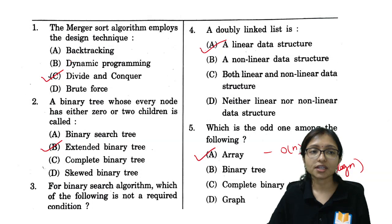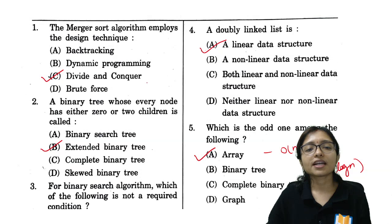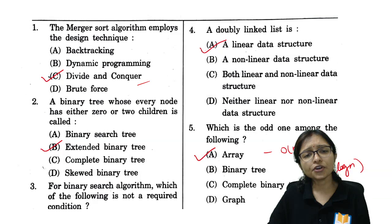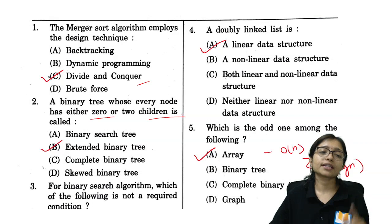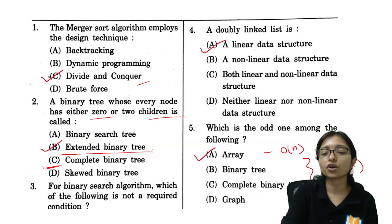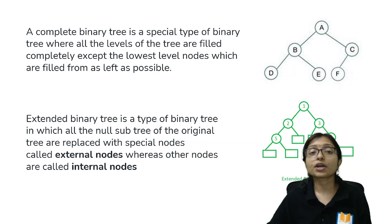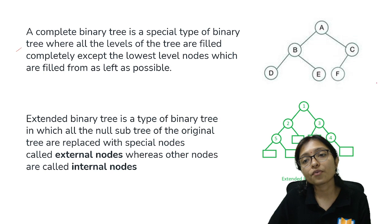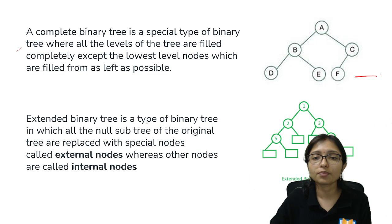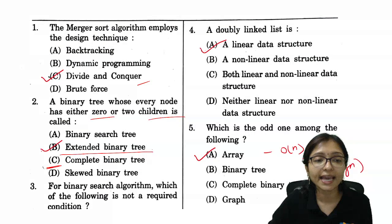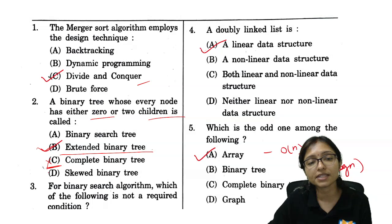Question 1: the merge sort algorithm uses the divide and conquer method — we all know that. Next: a binary tree where every node has either zero or two children is called an extended binary tree. Many students made the mistake of choosing complete binary tree. Complete binary tree means the last level may not be full, but extended binary tree means every node has zero or two children. So the answer is extended binary tree.